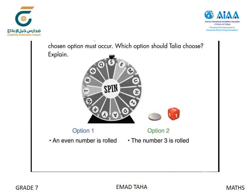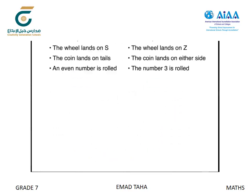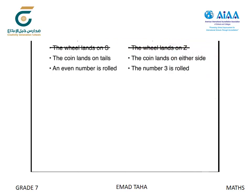As students analyze the role of the number cube, listen and look for students who calculate that the outcome for Option 1 is the more likely outcome. Ask students how they can compare the probabilities of all three outcomes for Option 1 and Option 2. Remind students that the wheel spin can be ignored because the probability of the desired outcome is the same for both options.